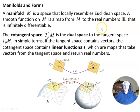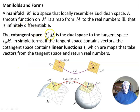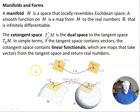Just briefly, a couple of concepts involving manifolds and cotangent spaces. The manifold M is a space that locally resembles Euclidean space. A smooth function on M is a map from M to the real numbers R that is infinitely differentiable. The cotangent space T*_P M is the dual space to the tangent space T_P M. In simple terms, if the tangent space contains vectors, the cotangent space contains linear functionals — maps that take vectors from the tangent space and return real numbers. So the one-form takes a vector and acts on it to produce a real number.